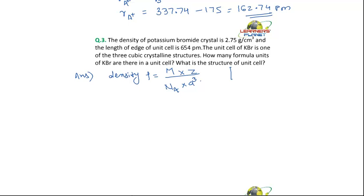So this is 39 and what is the mass of bromine? It comes out to be 80. So the mass of potassium bromide is equal to 119 gram per mole.